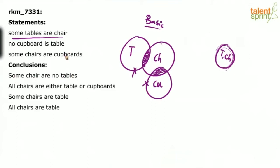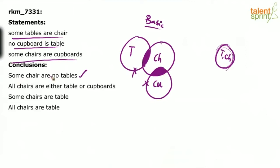But in this case, this would be a correct conclusion. If you look at the other two statements — no cupboard is table and some chairs are cupboards — there are always going to be some chairs which are cupboards. And we know that cupboards cannot be tables; cupboards and tables cannot overlap. If cupboards cannot be tables, these chairs which are cupboards cannot be tables. So always there are going to be some chairs which are not tables, and hence some chairs are not tables is a correct conclusion.